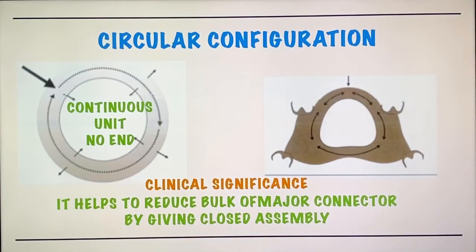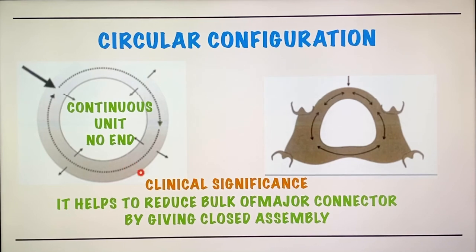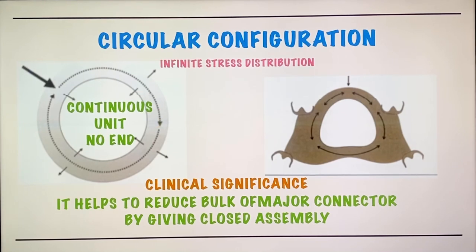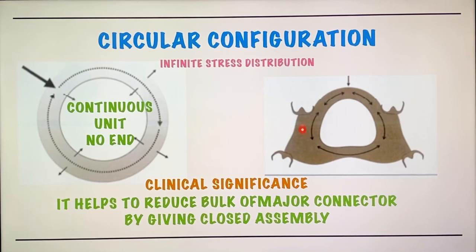Then comes circular configuration. As you can see, a circle is a continuous unit with no end, so stresses can be distributed all over the area of the circumference — there is infinite stress distribution. The clinical significance of that is it helps to reduce the bulk of the major connector by giving a closed assembly.